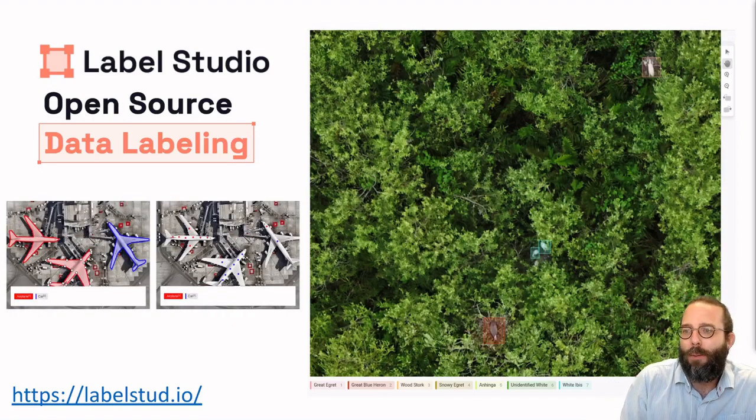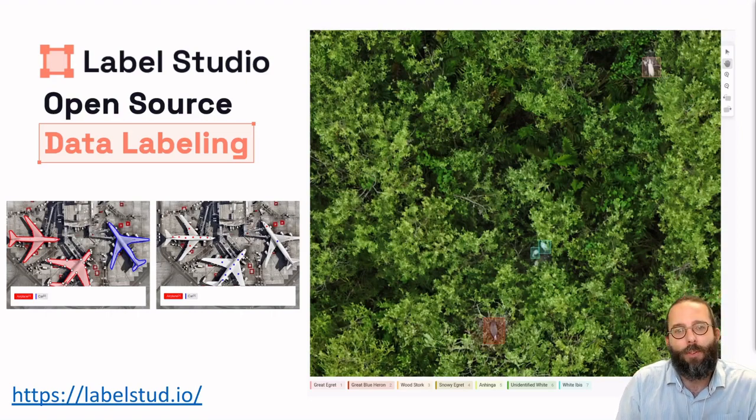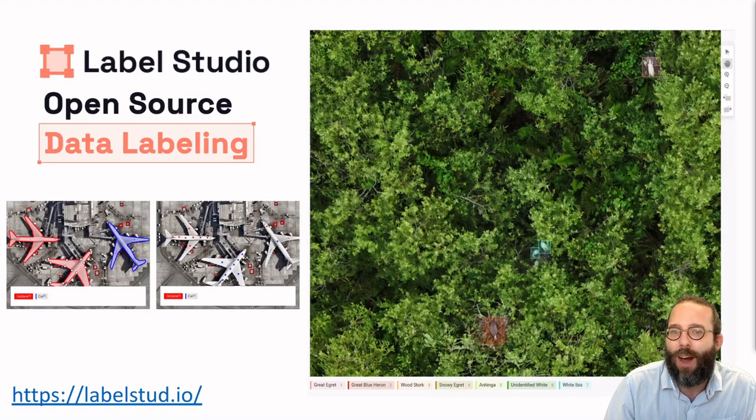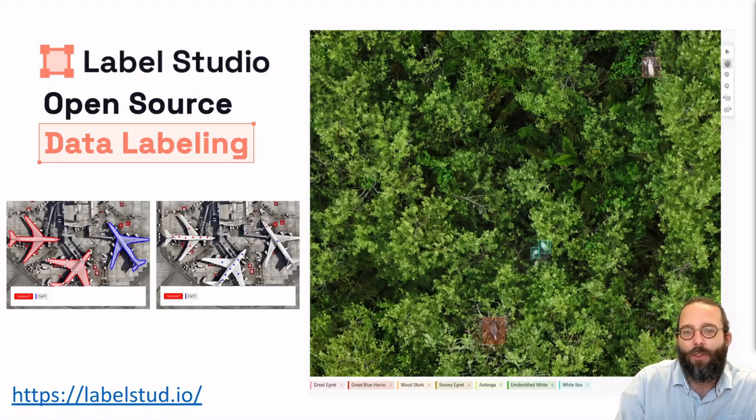We're using bounding boxes as our form of labeling, but I know some of the work that you all are working on requires more fine-grained labeling, and Label Studio supports a range of labeling tasks, including semantic segmentation and keypoint labeling. And it also supports integration with computer vision models for active learning approaches. That's something we're doing more and more of, getting the humans in the loop.